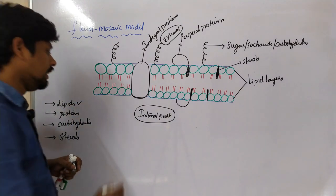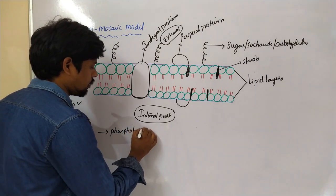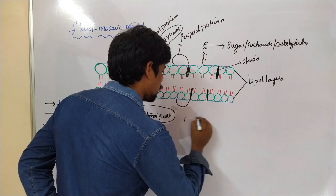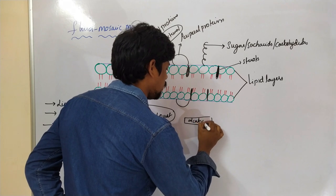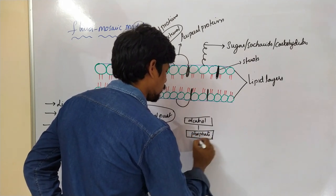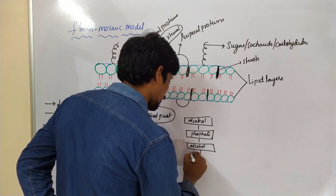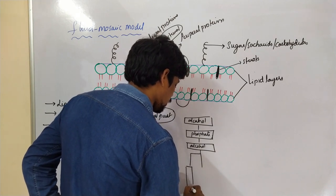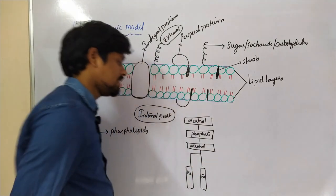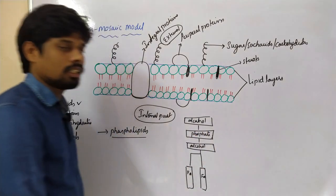Let us start with lipids. In the plasma membrane, most of the lipids are phospholipids. The general skeleton structure of lipids contains: alcohol, phosphate, another alcohol, and two fatty acids. The lipid that contains a phosphate group is called a phospholipid.